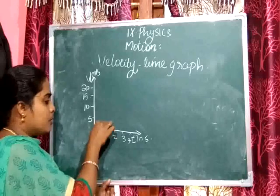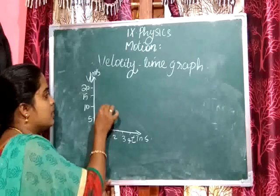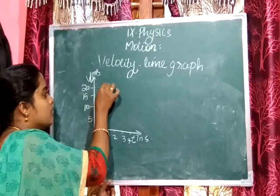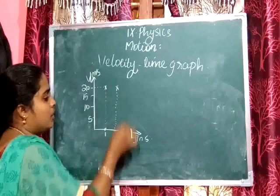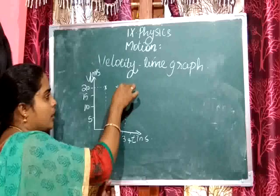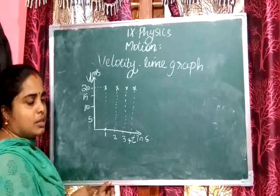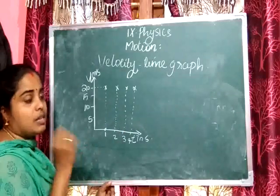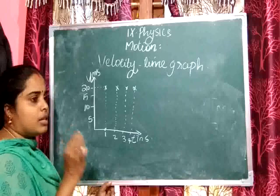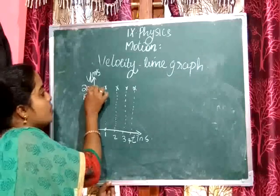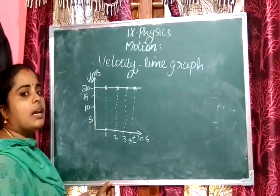Let the object move with a speed of 20 m/s. After 1 second, the speed is 20; after 2 seconds, again 20; after 3 seconds, again 20; after 4 seconds, again 20. The velocity does not increase or decrease with respect to time — the object moves with a constant velocity. When we join all these points, we get a straight line parallel to the x-axis.